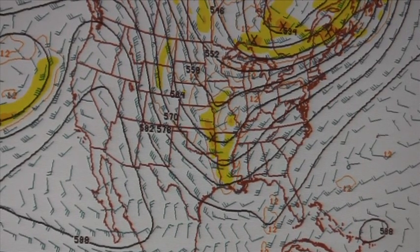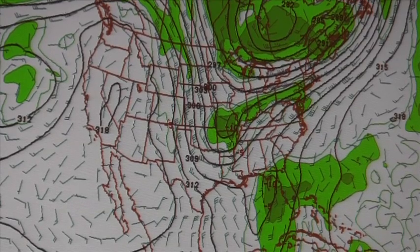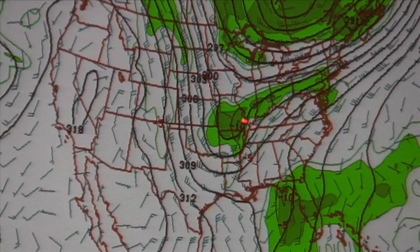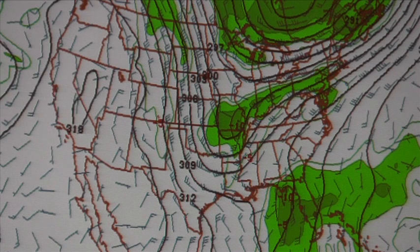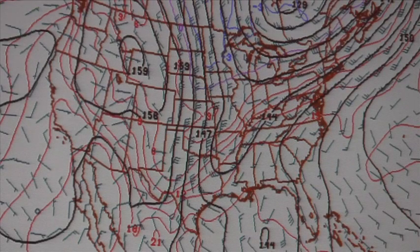At the 700 millibar level for the 12-hour forecast, there is a lot of moisture associated with those low heights developing to our southwest. There is not much lifting or moisture over pretty much any of Alabama right now. On the 850 millibar chart, we are still in neutral advection, but you can see the strong cold air advection that's setting up to the west of that trough.